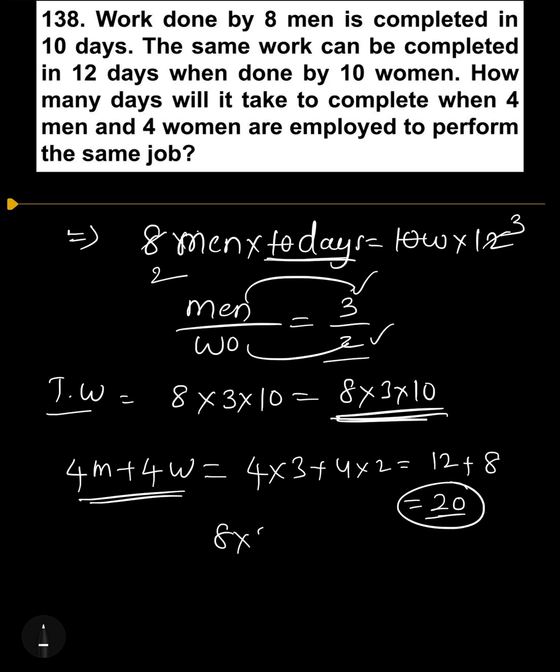Total work equals 8 times 3 times 10, divided by efficiency 20. Zeros cancel. 2 ones are 2, 4 threes are 12 days. The answer is 12 days.